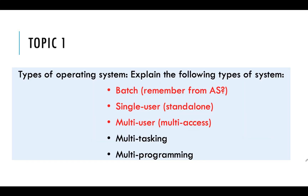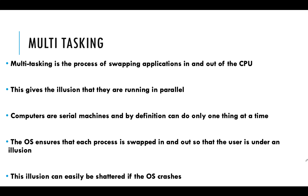Now we need to talk about multitasking. Multitasking is the process of swapping applications in and out of the CPU. It gives the illusion that they are running in parallel, when in actual fact they're not, because computers are serial machines by definition and can only do one thing at a time per processor. The operating system ensures each process is swapped in and out so the user is under that illusion — though it can be shattered if the operating system crashes or a program stops responding.